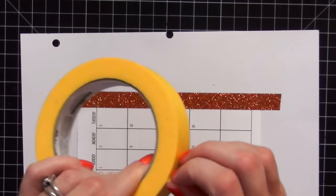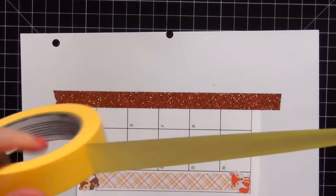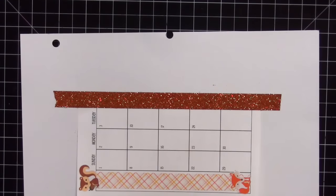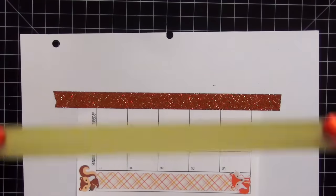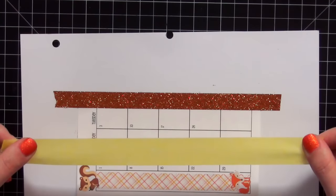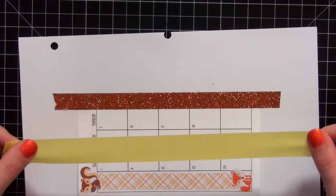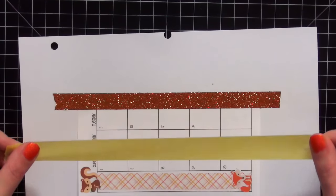This is low-tack frog tape, but don't let that fool you guys. For the So Much Crafting inserts, this is still too strong. So what I do is I take it and I run it on my jeans or my pants several times before I use it. So I'm going to do that now.